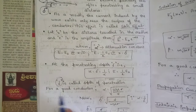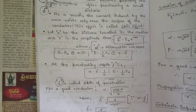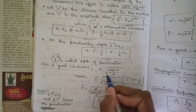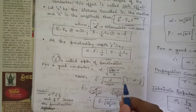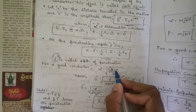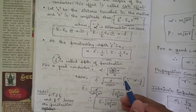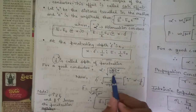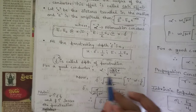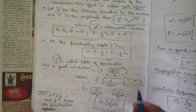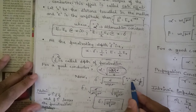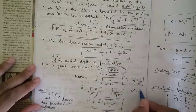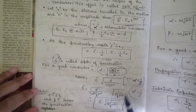For a good conductor, the attenuation constant is: α = √(ωμσ / 2), where ω is the oscillating frequency, μ is the permeability (μ₀ in free space), and σ is the conductivity. Since α = 1/δ, we have a direct relationship between attenuation constant and depth of penetration.